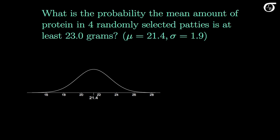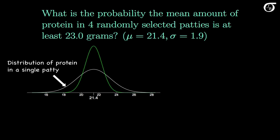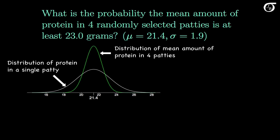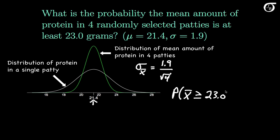That last question involved the amount of protein in a single patty. Now the question changes: what is the probability the mean amount of protein in four randomly selected patties is at least 23 grams? In white is the distribution of protein in a single patty, but here we're interested in the sampling distribution of the sample mean for four patties, drawn in green. This sampling distribution has the same mean of 21.4, but its standard deviation is sigma of 1.9 over the square root of 4. We need the area to the right of 23.0 under the green curve.